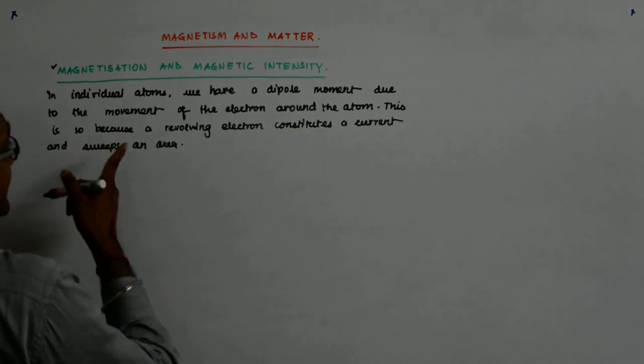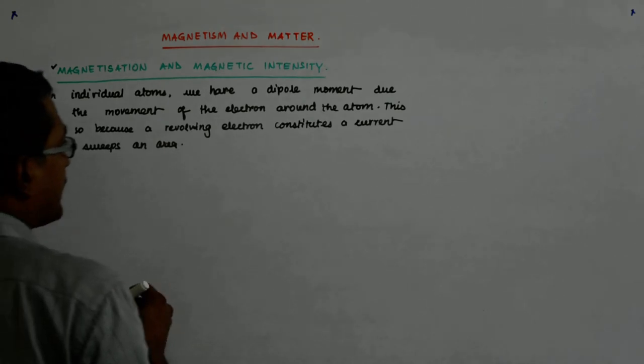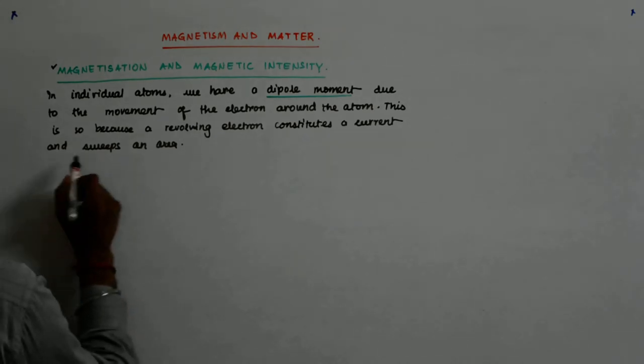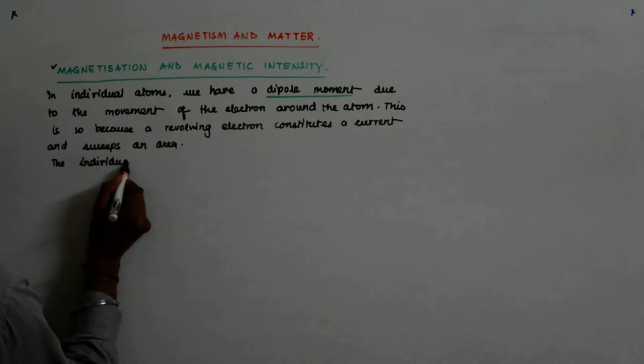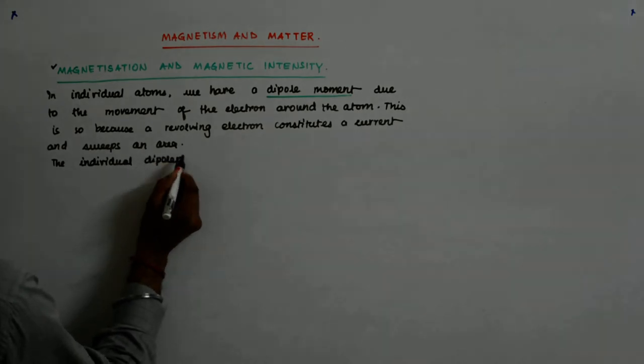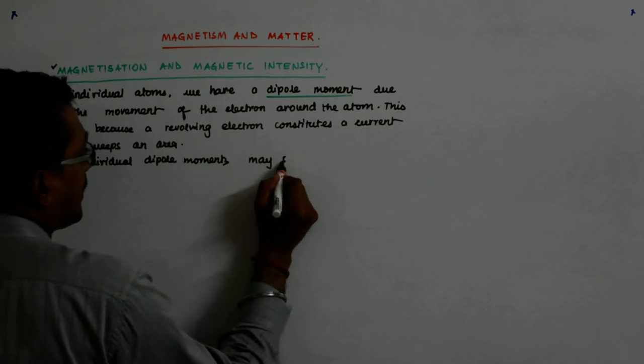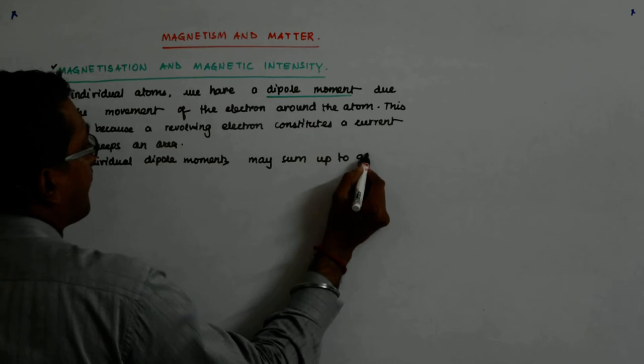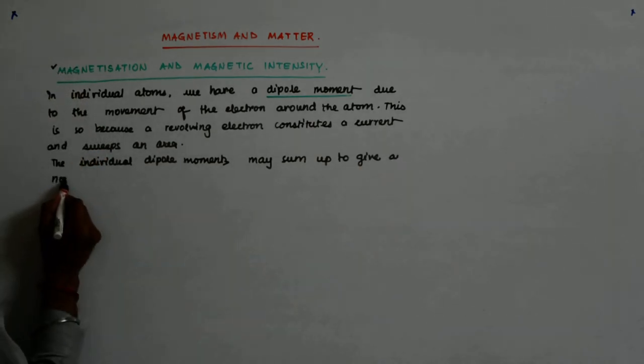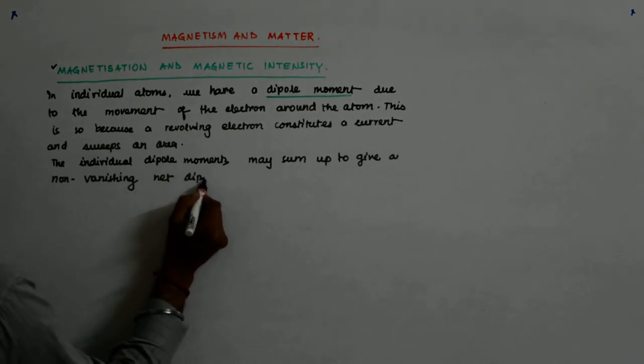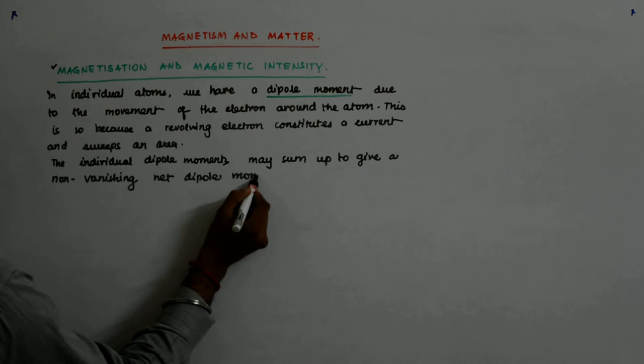This dipole moment of individual atoms may sum up to give you a net dipole moment. The individual dipole moments may give a non-vanishing net dipole moment.